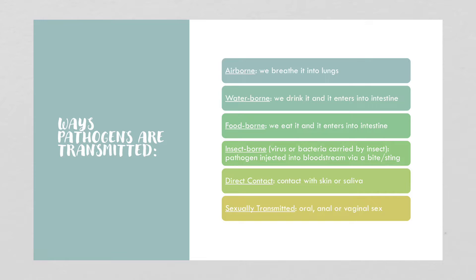Airborne pathogens are breathed right into our lungs. There has been a lot of debate about the transmission of COVID-19. For the first year it was said to be droplet-based, so maintaining a two-meter distance and wearing a mask were the main protections. But we're now realizing that some droplets are so tiny they remain suspended in the air, meaning we could breathe them in even after an infected person has left the area. This is why N95 masks and proper air filtration have become a major focus.